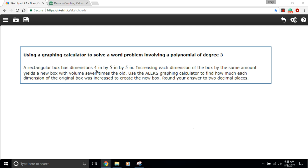It says a rectangular box has dimensions 4 by 5 by 5. Increasing each dimension of the box by the same amount yields a new box with a volume 7 times the old. And then we're going to find a solution with a graphing calculator.